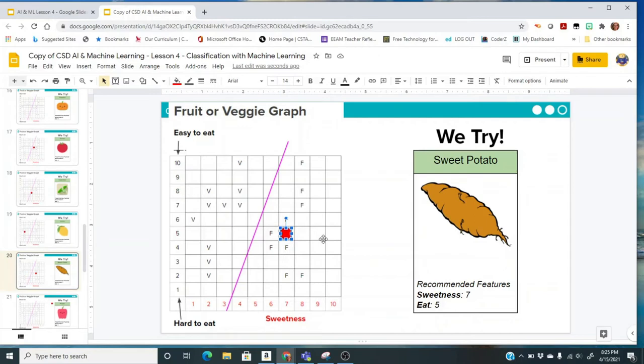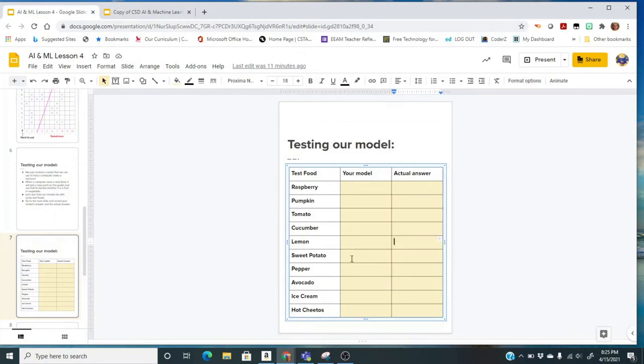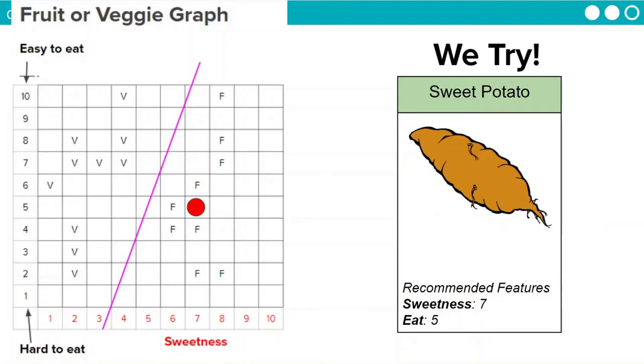What did your model say? Well, we probably know that potatoes are vegetables. So our model is not always going to get it correct. Most models will probably get this answer incorrect, which means our foods were misclassified. This happens in real life too. Sometimes models make mistakes and get incorrect answers.